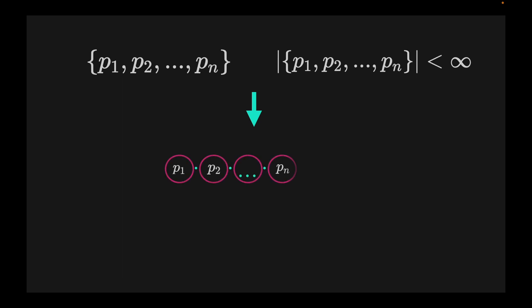First, we multiply all the primes with each other, and then we add one to the result. This new number we shall call q.